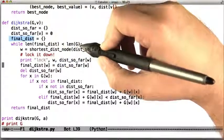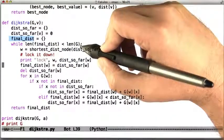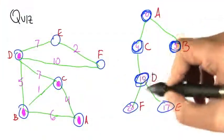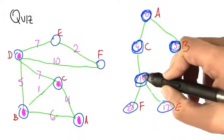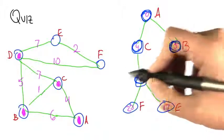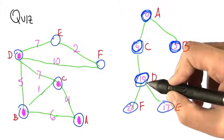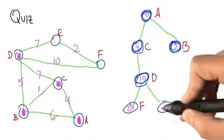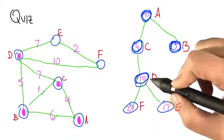Now there's an additional data structure, which I call final_dist, which is once we actually figure out what the real distance is, we stick it in this structure. That's basically the numbers that are in the heavy circles here. When a circle becomes heavy because I'm locking it down, I move that number into the final_dist mapping, and I delete it from the dist_so_far, so that number doesn't exist anymore in the dist_so_far mapping.